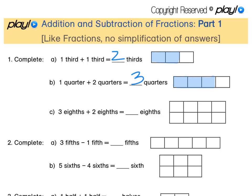For C, 3 eighths plus 2 eighths. We've got 3 eighths, and if we add another 2 eighths — 1 more eighth and another one — that means we have 5 eighths in total.